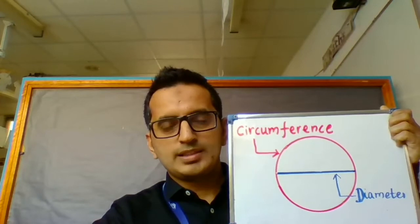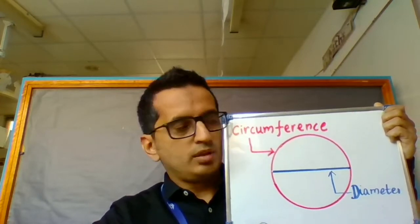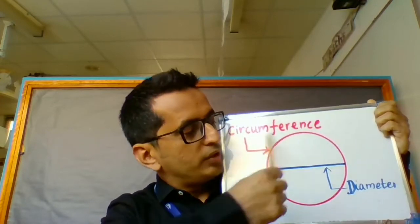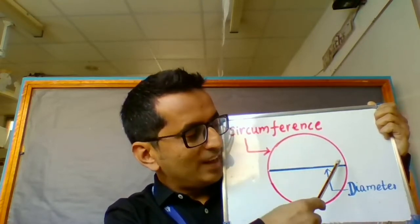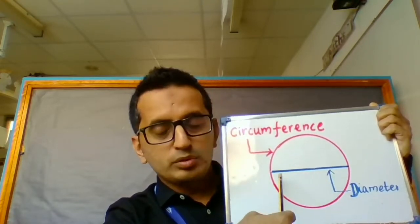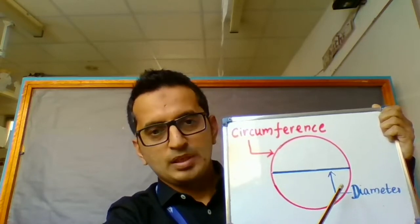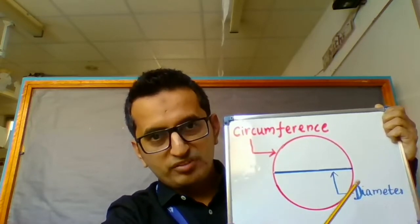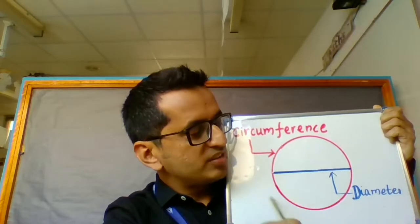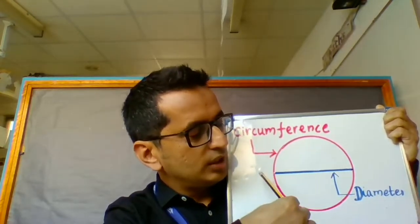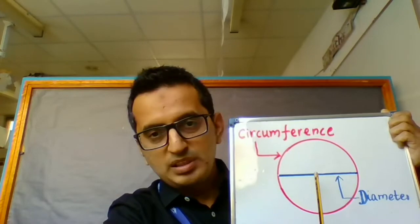Now, before we continue, let's revise what we know about the circle. We know the outer part of the circle is called the circumference, and the line segment which passes through the center of the circle is called the diameter. This is important for our exploration today. So, the circumference is the outer part of the circle and the line segment passing through the center is our diameter.